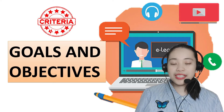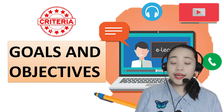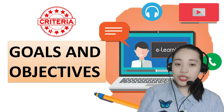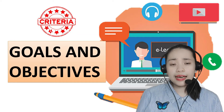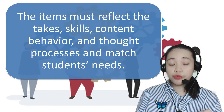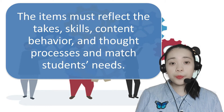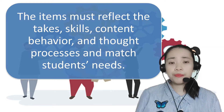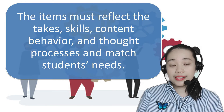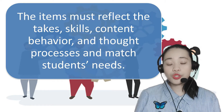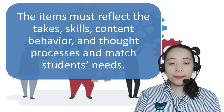Let's talk about the criteria for goals and objectives. Goals and objectives are statements of curricular expectations. They are sets of learning outcomes specifically designed for students. The items must reflect the tasks, skills, content behavior, and thought processes that make up curricular domains and must also match students' needs. Goals and instructional objectives are formulated and specified for the following purposes.